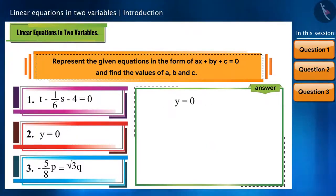In the second equation, there is only one variable. So, taking the second variable as 0, we will write it like this: 0x plus y plus 0 is equal to 0. Now, comparing it with the general form, we will get a is equal to 0, b is equal to 1, c is equal to 0.